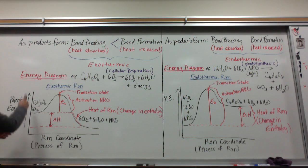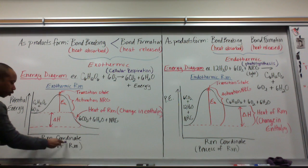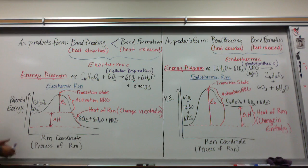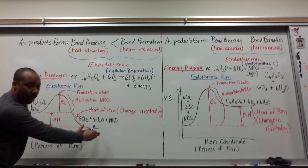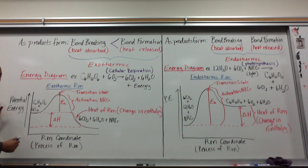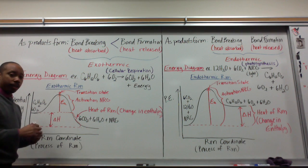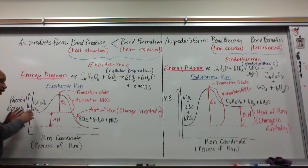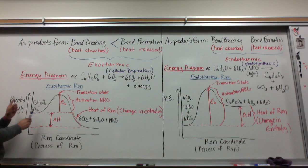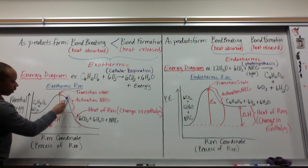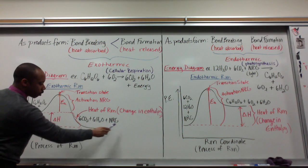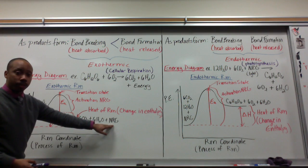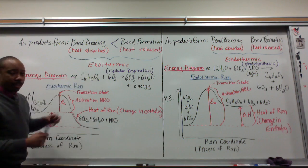The axes are potential energy on this side and reaction coordinate, which just means the process of the reaction — going from the beginning to the end. Potential energy is stored energy in the chemicals or their bonds. In the beginning, I have my reactants: glucose plus oxygen gas. The black line is my graph — I start with these reactants and they gain energy, reaching the top of the hump, and then they start forming products: carbon dioxide, water, and energy. Since energy is being produced, that is my exothermic reaction — energy is being released at the end.